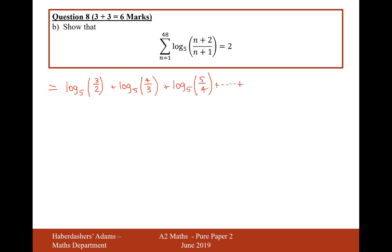And this is going to continually sum all the way up to, let's put 47 in now. So log base 5 of 47 plus 2 is 49, over 47 plus 1 is 48. And let's put in the final term of 48, so it'd be log base 5, 48 plus 2 is 50 over 49.